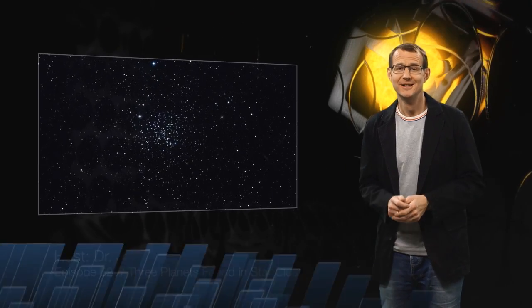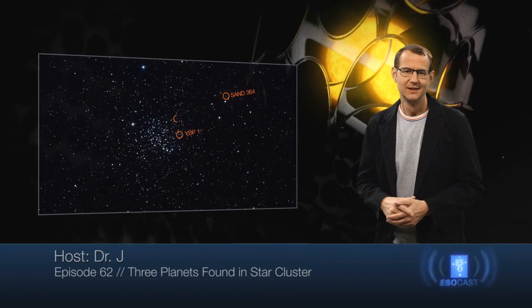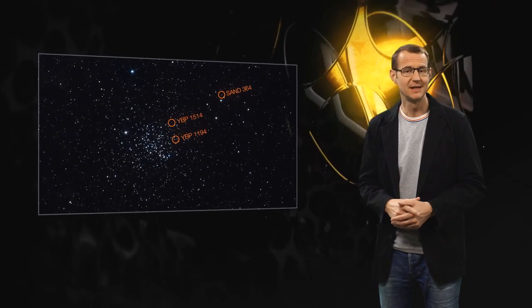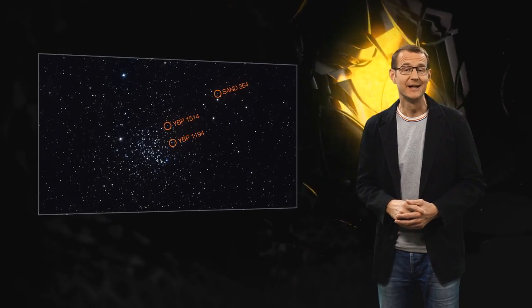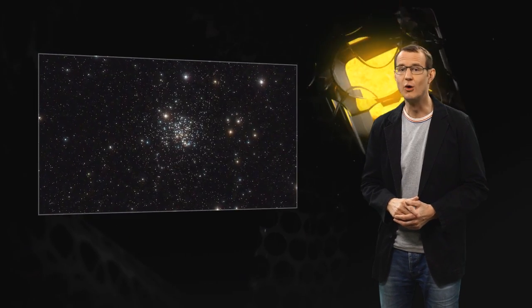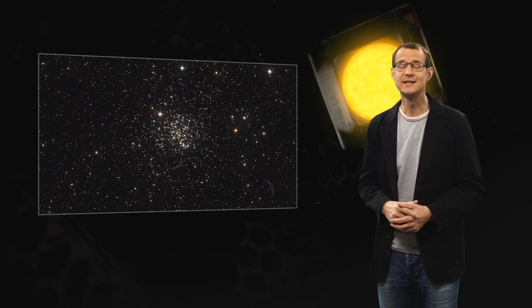Good news everyone! Three brand new exoplanets have been discovered. Considering that we already know about a thousand exoplanets, that might not sound like much. But this finding is in fact a little unusual, because these three planets orbit stars inside a cluster of stars known as Messier 67.